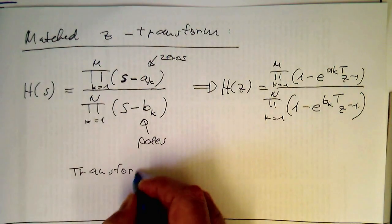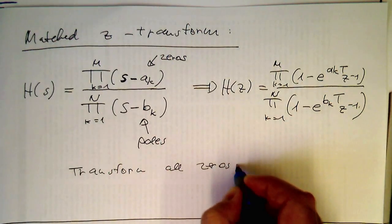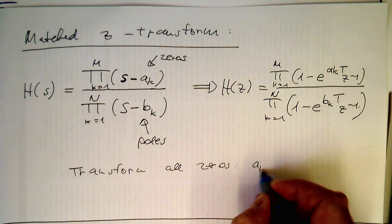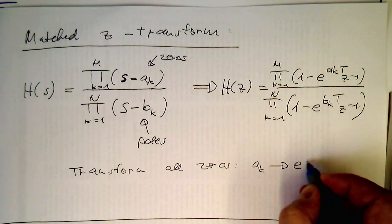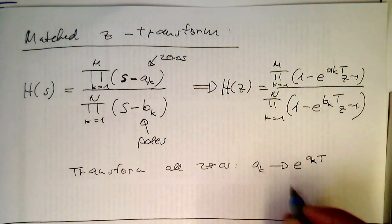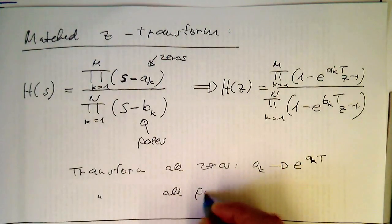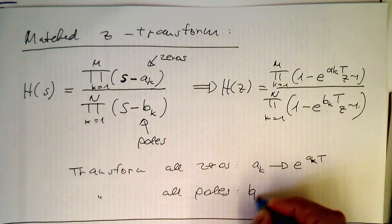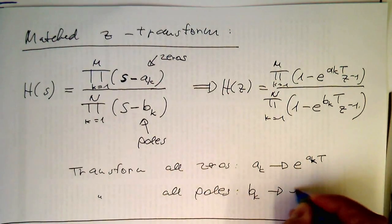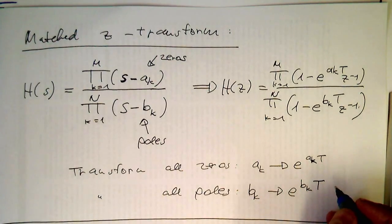So we're just transforming essentially: transform all zeros a_k to e to the a_k T, and do the same—transform all poles b_k to e to the b_k T. We just do it one-to-one like that.